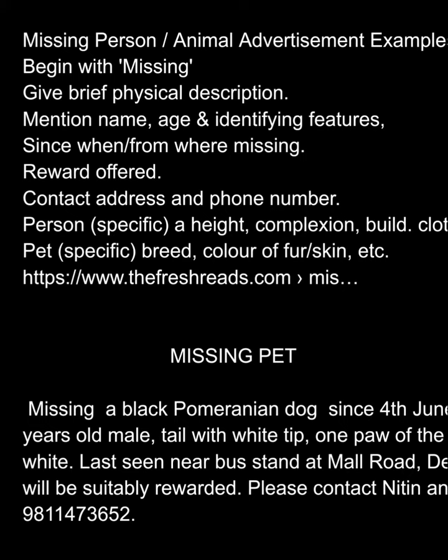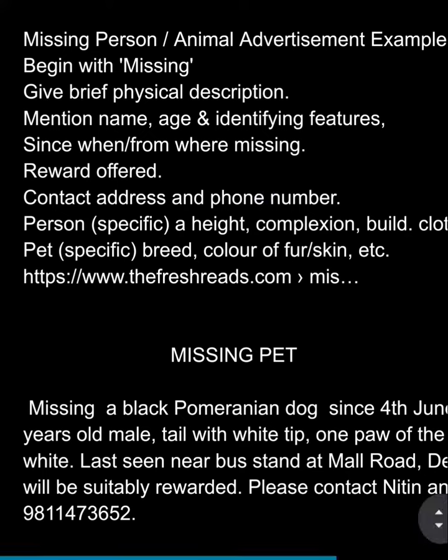Begin with 'missing'. Give a brief physical description — spots on tail, any signs or cuts. Include the physical description, name, age, and identifying features — particular breed and particular features. Mention since when and from where the animal went missing. A reward can be offered if you wish to inform or return it. Include contact address and phone number.